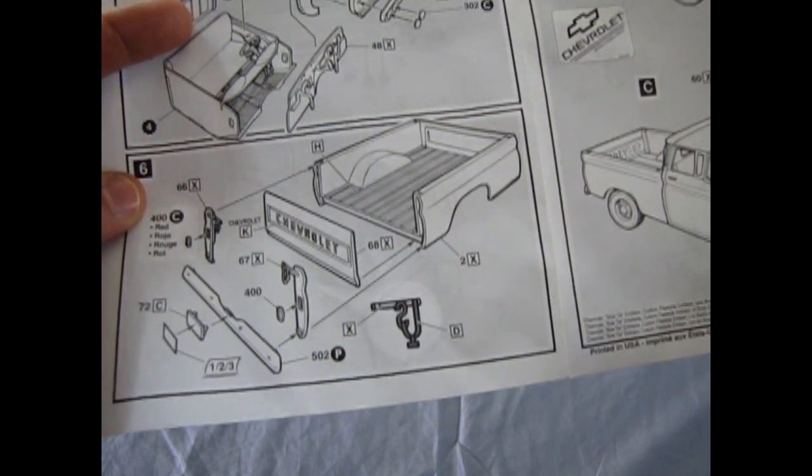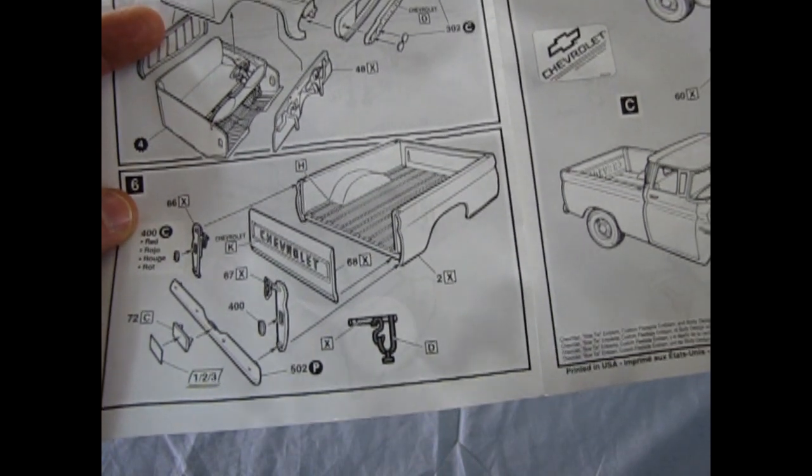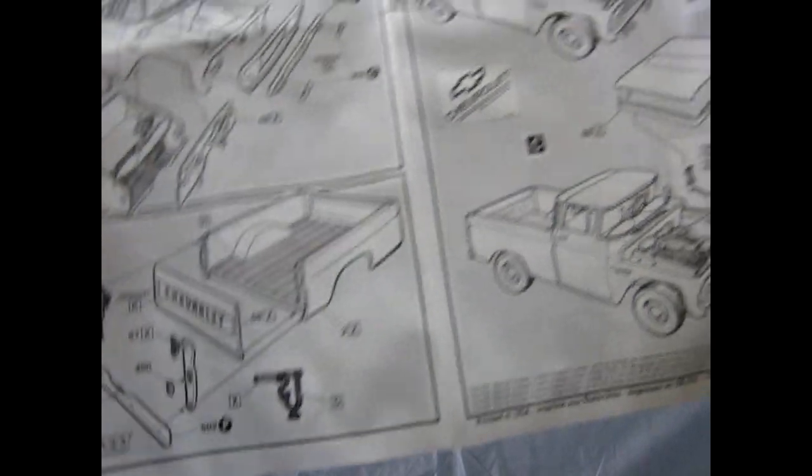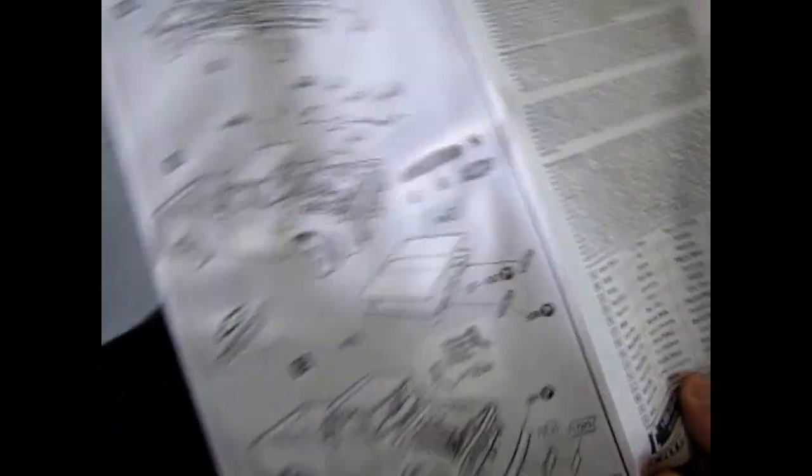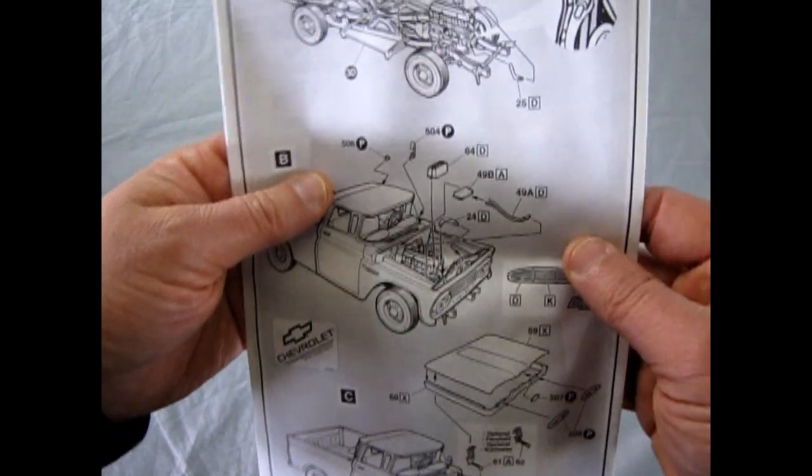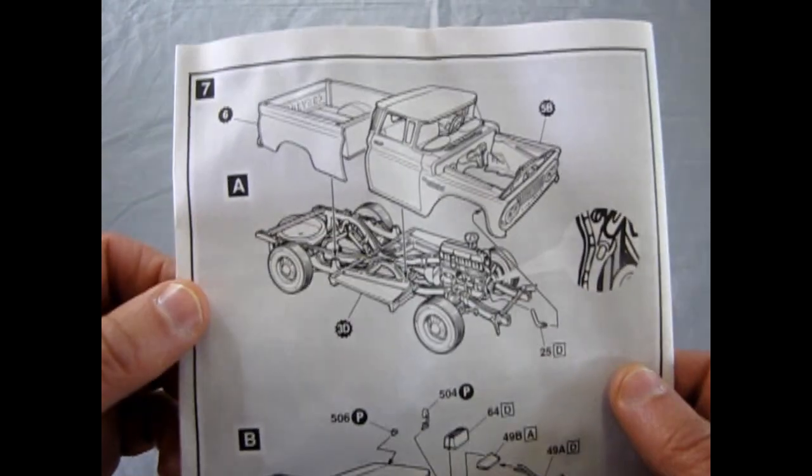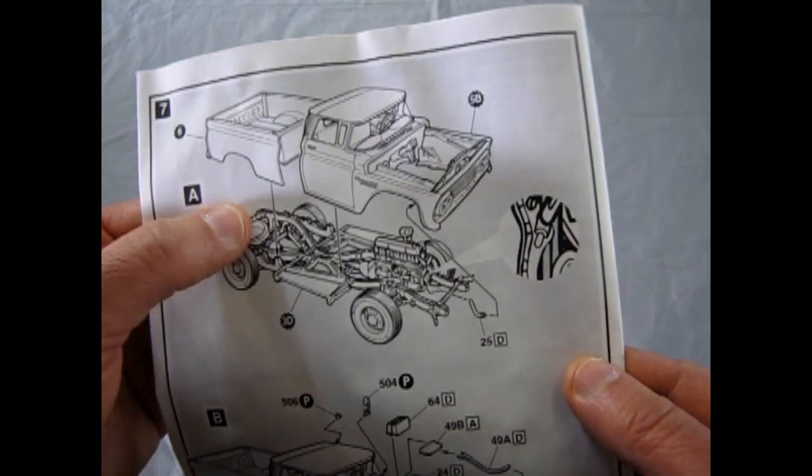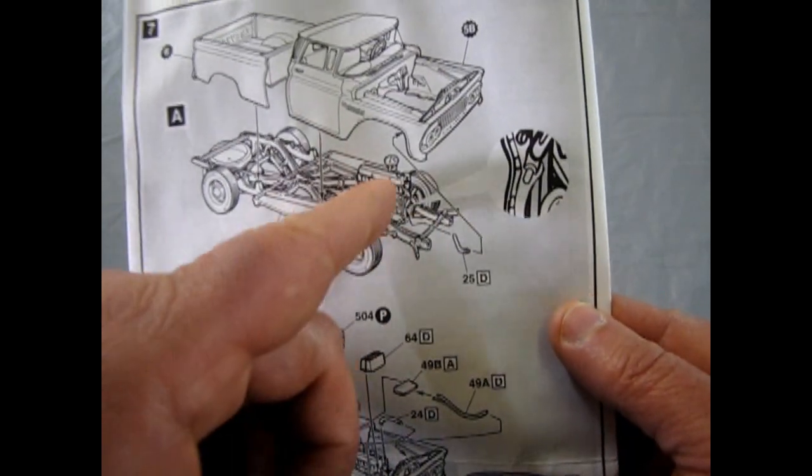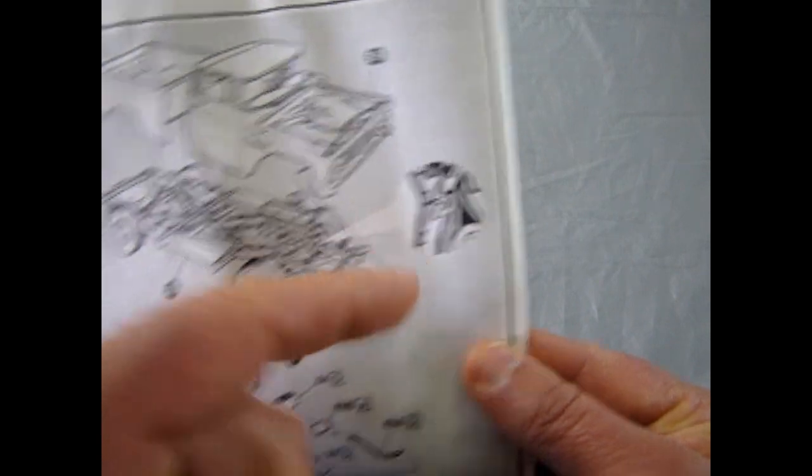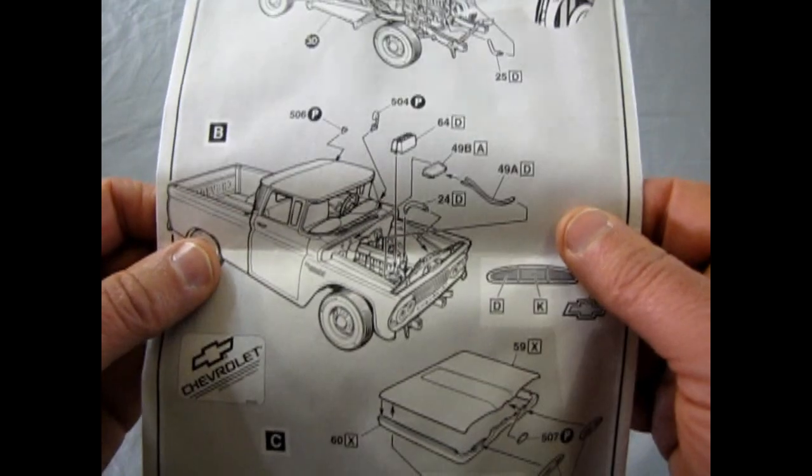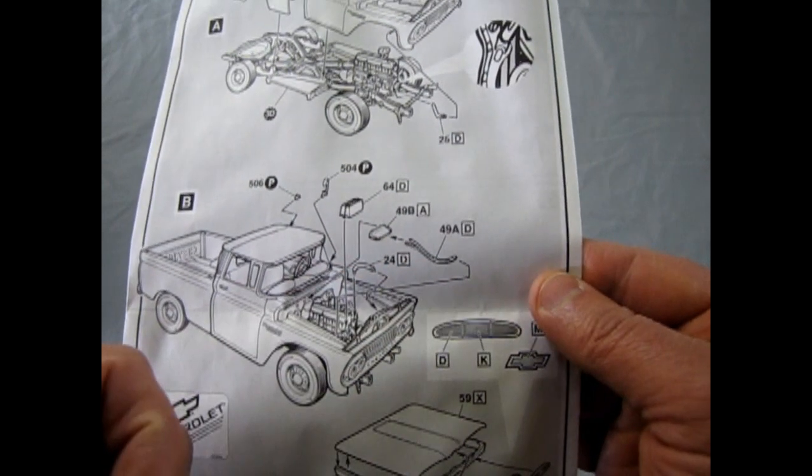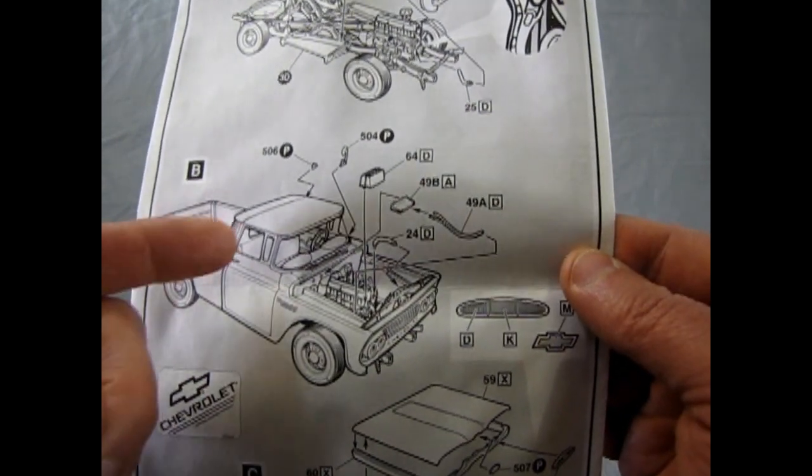There's your pickup bed with the tailgates. It even shows you how to hook up the chains, where it goes, how to paint them. Maybe not hook them up, but at least how to paint them. Then we get into the body, chassis, and bed assembly going together. There's a radiator hose that goes in here to the radiator. Then you're adding in your battery and the radiator hose components, that sort of thing.